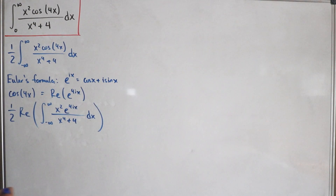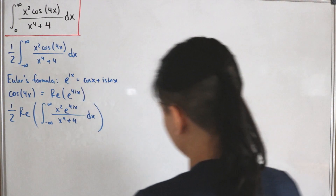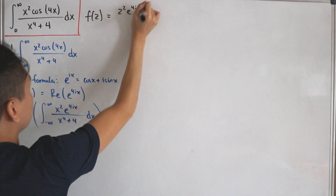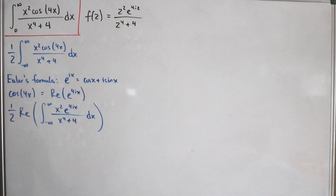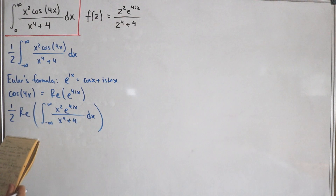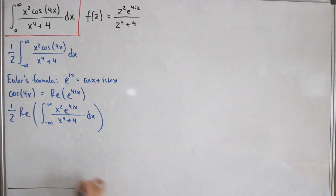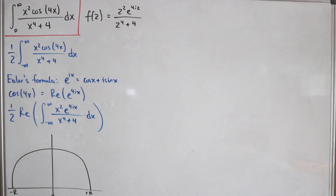Now we jump into complex analysis and consider our function in terms of the variable z: f(z) = z squared times e to the power 4iz divided by z to the power 4 plus 4. We'll apply contour integration. Consider the upper half-plane with an upper semicircle, with bounds from negative R to positive R on the real axis.